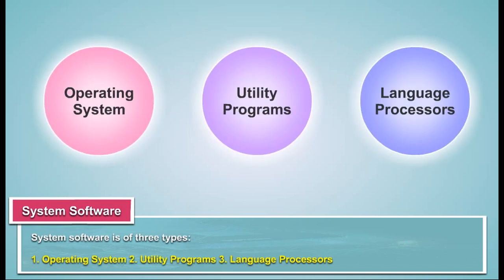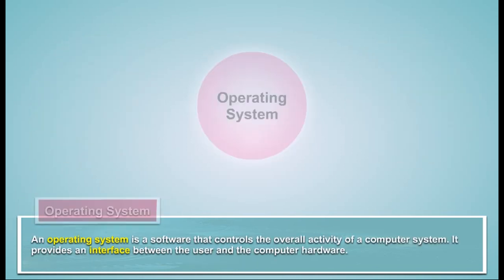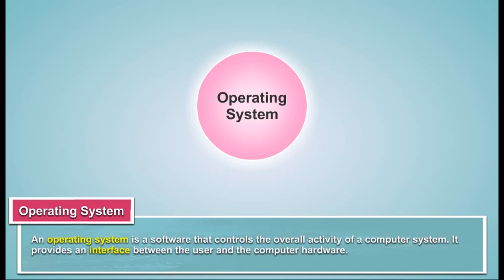System software is of three types: Operating System, Utility Programs, and Language Processors. An operating system is a software that controls the overall activity of a computer system. It provides an interface between the user and the computer hardware.